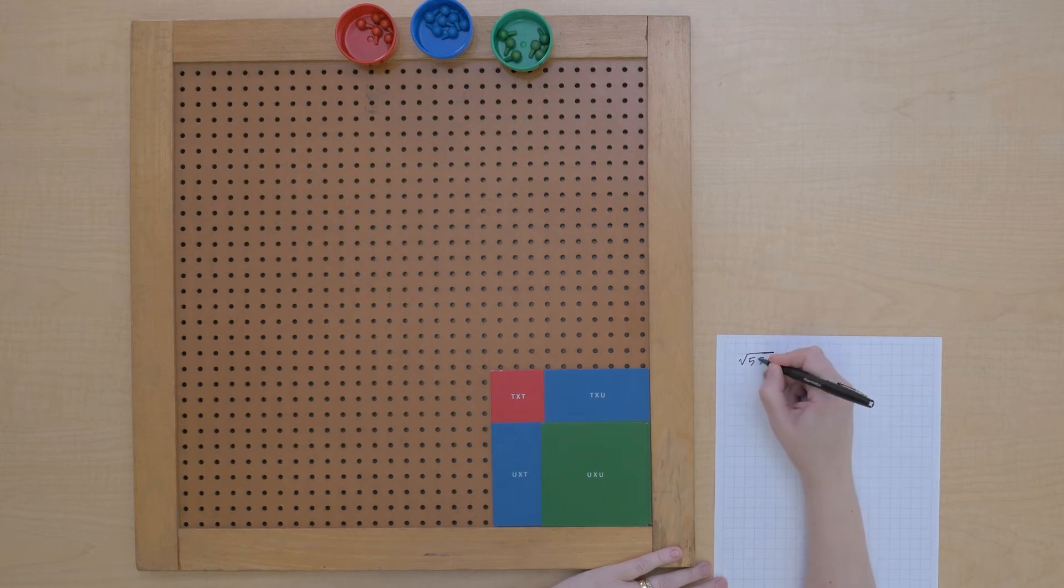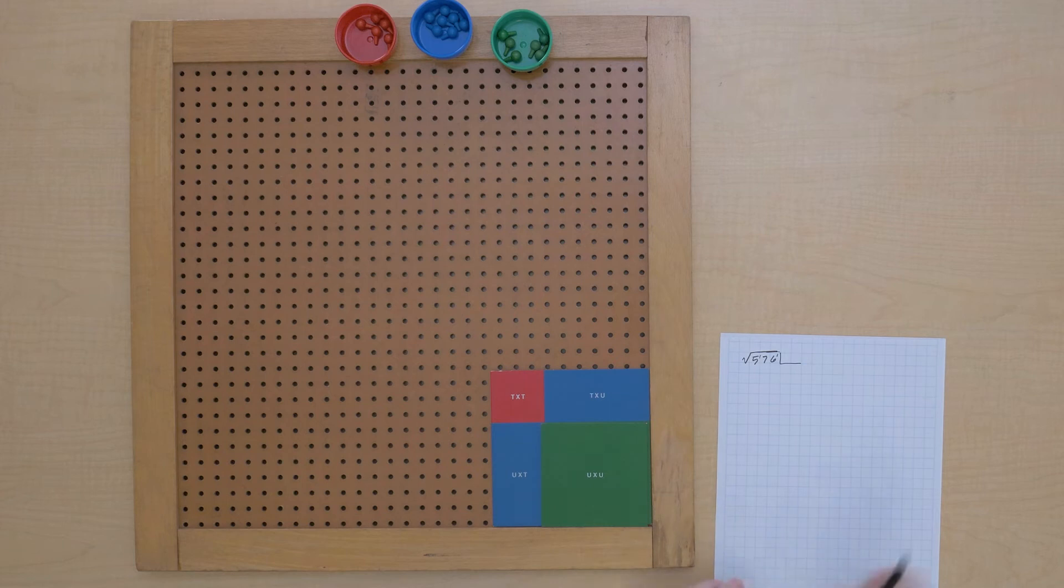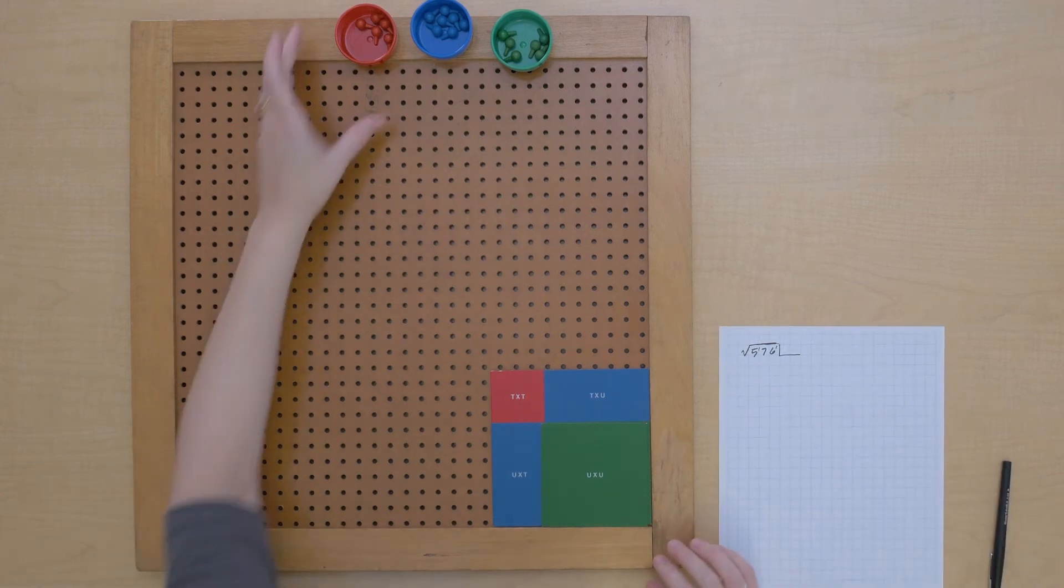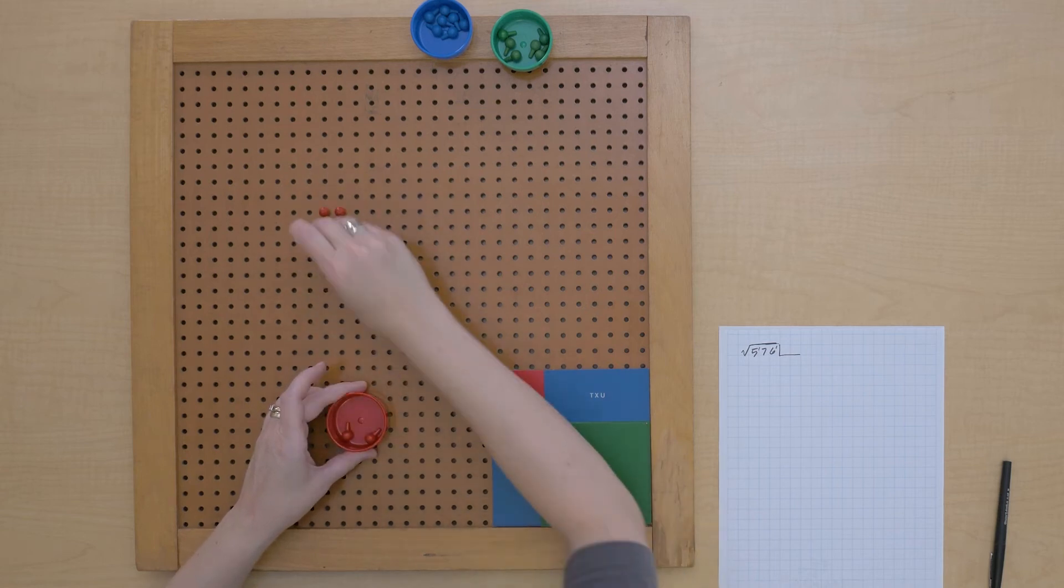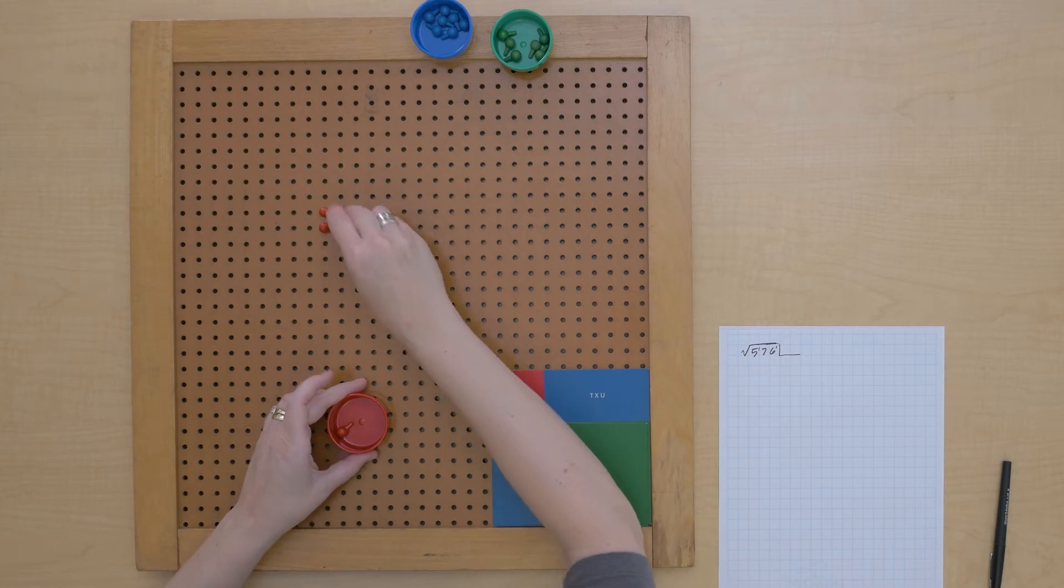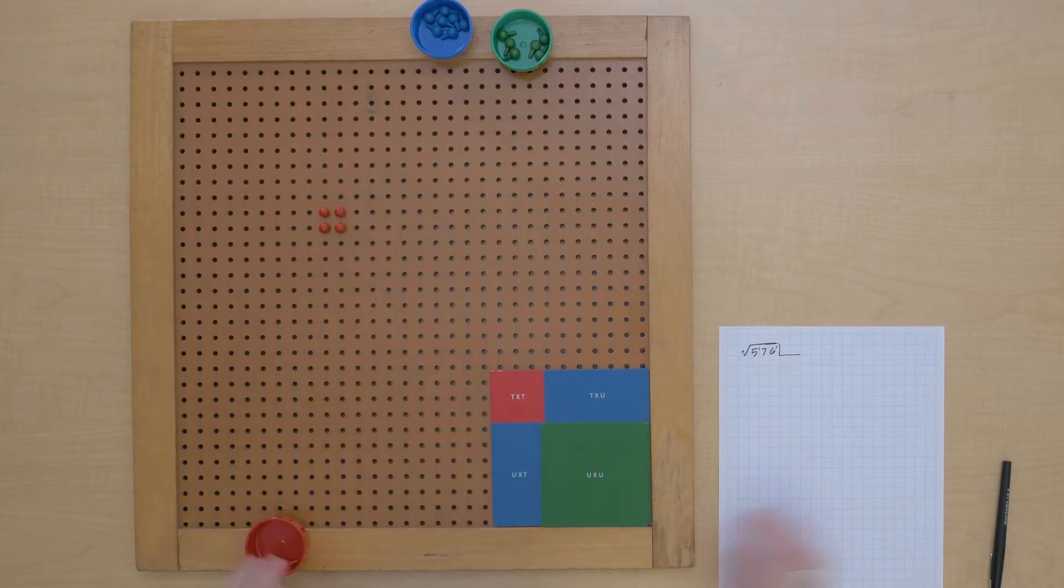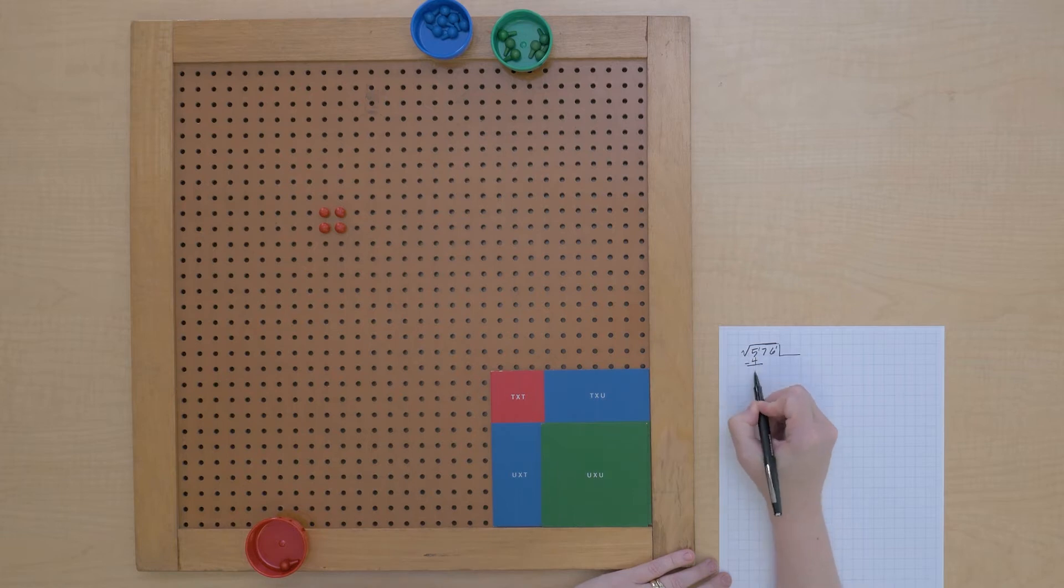So we're going to find the square root of 576 today and I can see it's going to be a two-digit root. So I built the number here and let's start. That's all I can do now before we do anything else. I want to take a look at something - we had 5 hundreds, we used 4, so we should have 1 left.